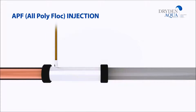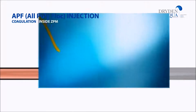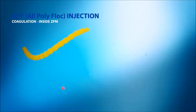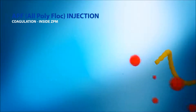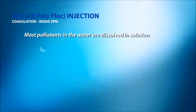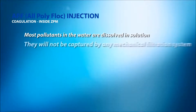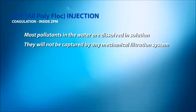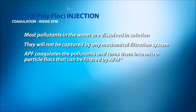To filter out dissolved pollutants from the water, they must be coagulated. The process will drag dissolved chemicals out of solution to form small particles called floc. This is the first feature of APF. Coagulation happens in just a second, and it's the best way to remove dissolved pollutants from the water.